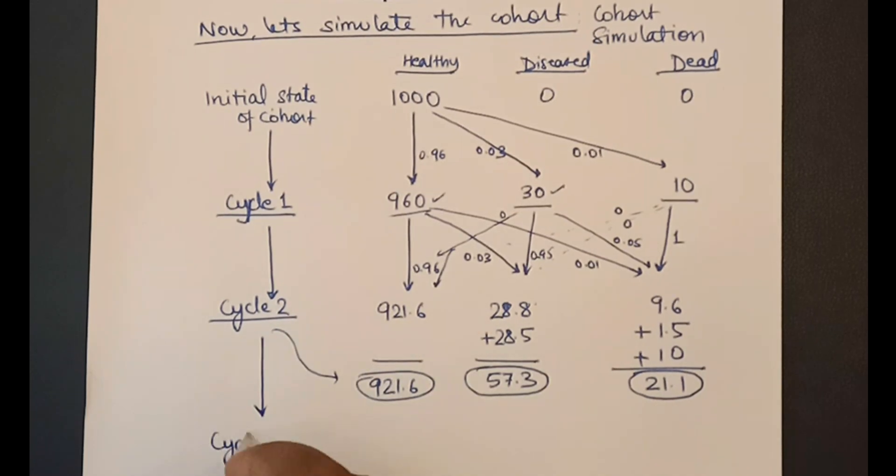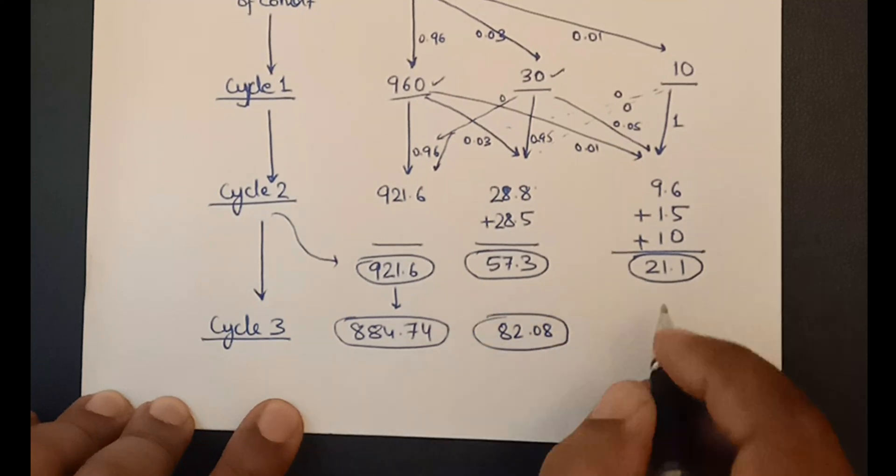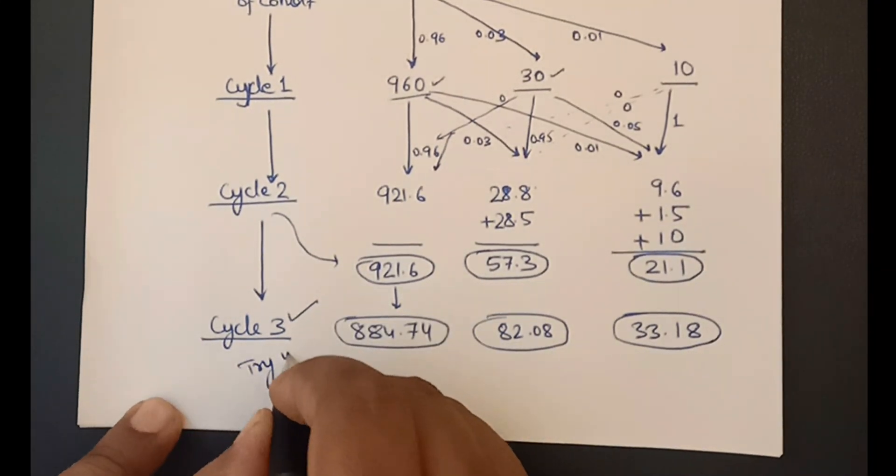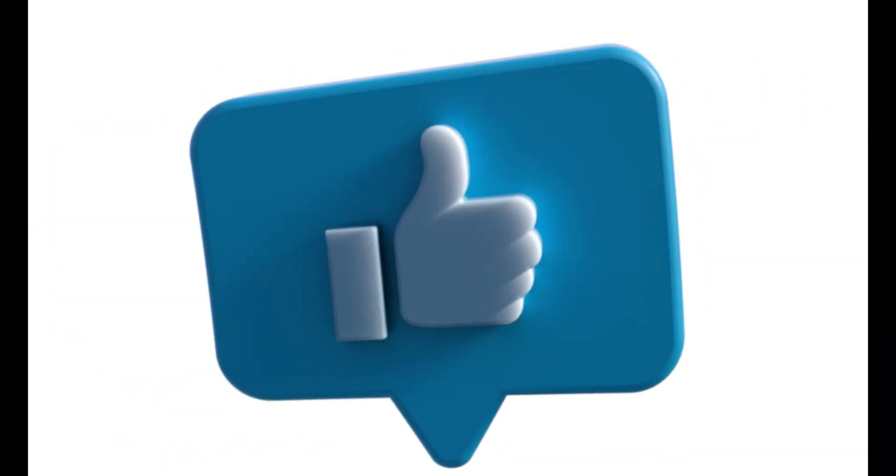Now, you can try the cycle 3 whose results are 884.74, 82.08, and 33.18. Try out this cycle and see if you get the same results. These videos and animations take a long time to create. So please support us by subscribing our channel.